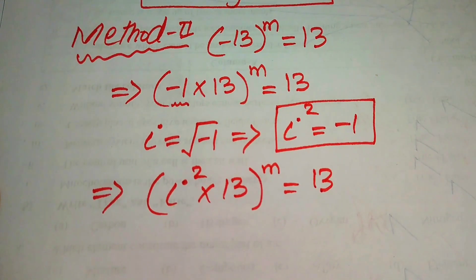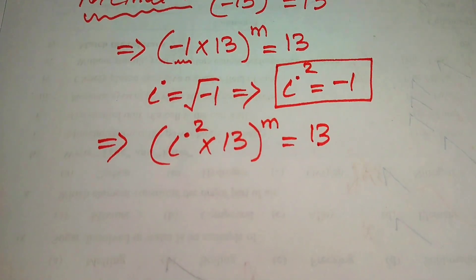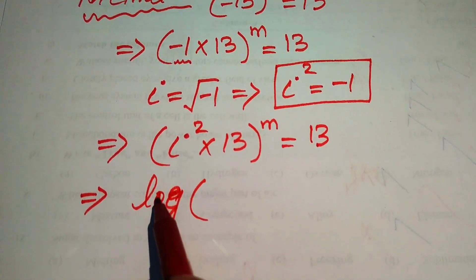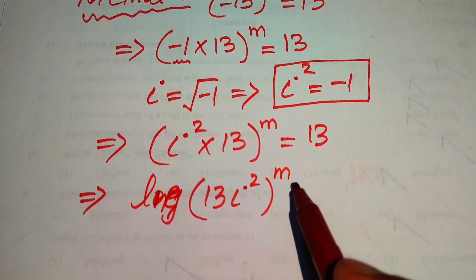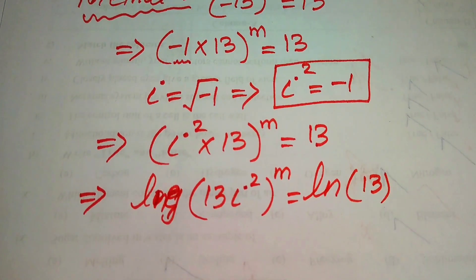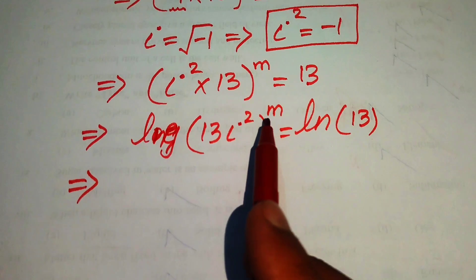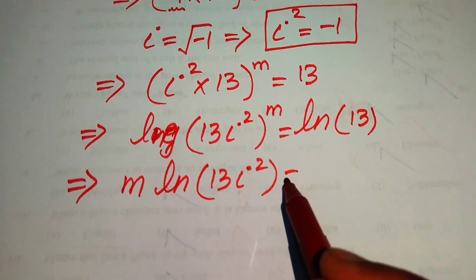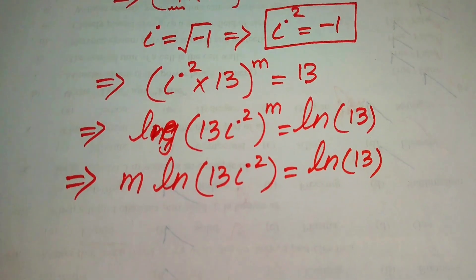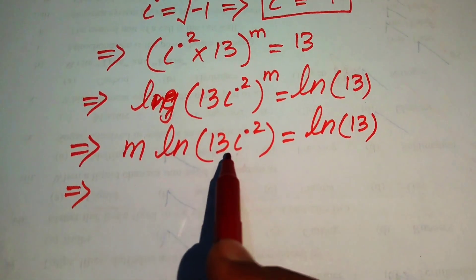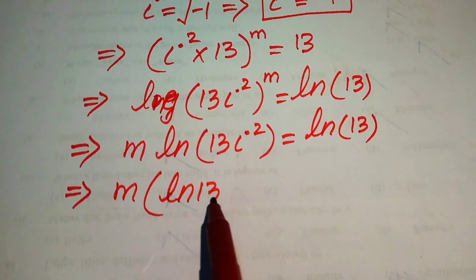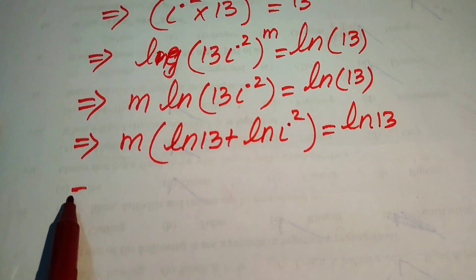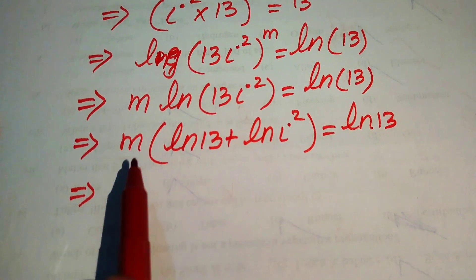In the second method we take the natural logarithm on both sides instead of the common logarithm. This gives ln[(13 · i²)^m] = ln(13). Applying the power rule, we move m to the front: m · ln(13 · i²) = ln(13). Using the product rule, we separate: m · [ln(13) + ln(i²)] = ln(13). Then the exponent 2 moves in front, giving m · [ln(13) + 2·ln(i)] = ln(13).